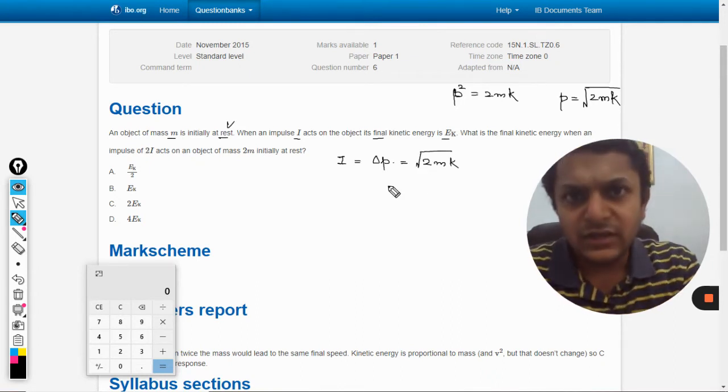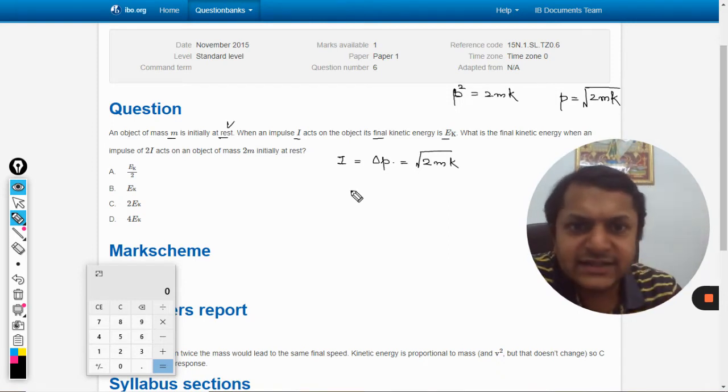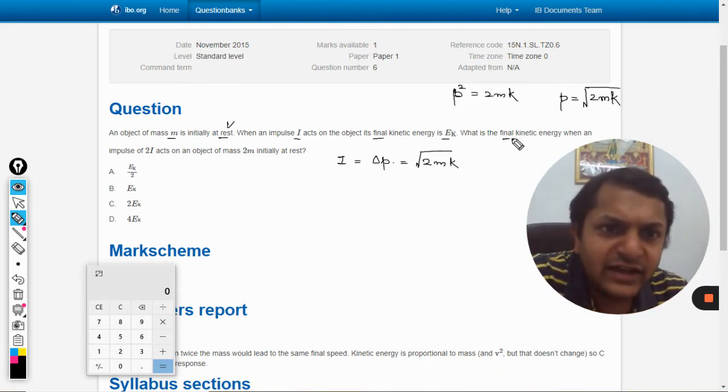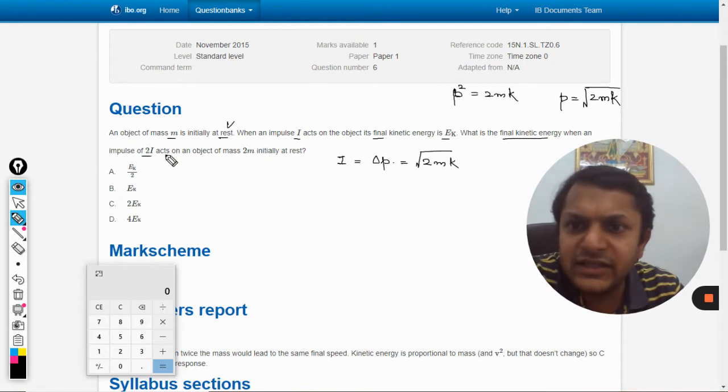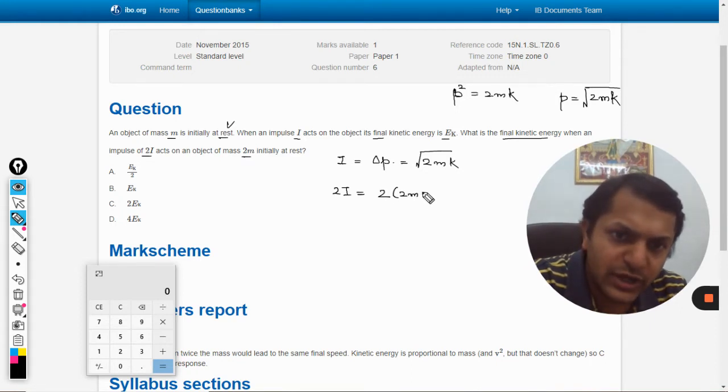Now the second case is asking: what is the final kinetic energy when the impulse of 2i acts on the mass of 2m? So we have the square root of 2 times 2m and k dash is the new kinetic energy.